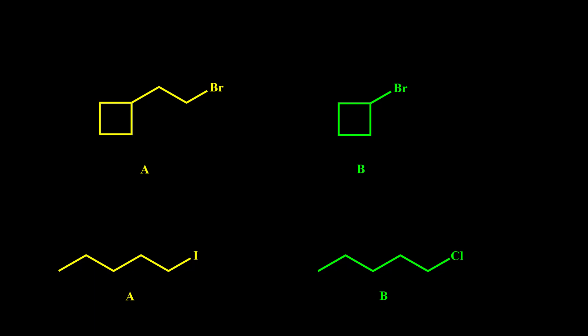As we know, in SN2 reaction, CH3X has the highest rate of reaction. After that, primary alkyl halide, then secondary alkyl halide, and the worst one is tertiary — and most of the time, tertiary doesn't have any SN2 reactions. The rate of reaction for SN2 depends on the steric effect, so if we have a bulkier alkyl halide, we have a lower rate of reaction.